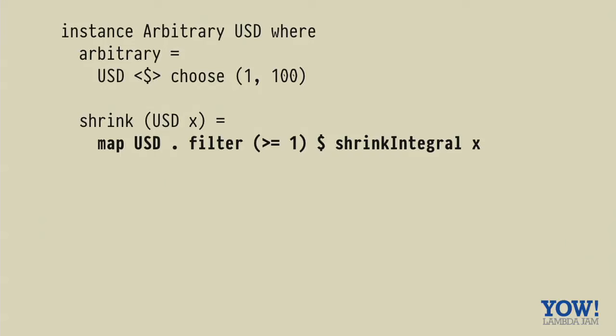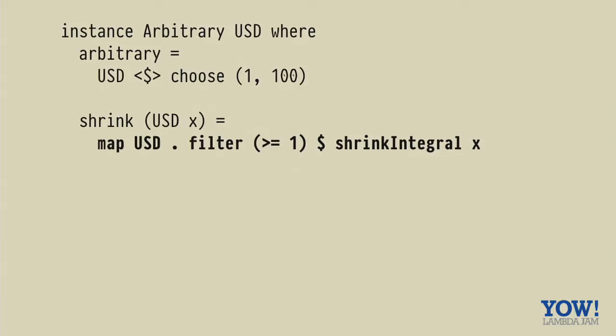We move on to the price. This one's interesting. There's a built in shrink function for integers. So we can use that, but it's going to shrink our integer all the way to zero. So that's not ideal because our invariants here show that we really only want prices between one and a hundred. So we have to make sure we filter out the resulting shrink so that we only get prices which match the invariants, so that's cool.